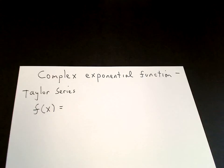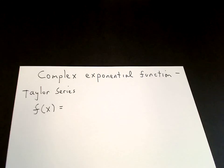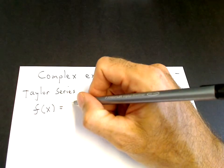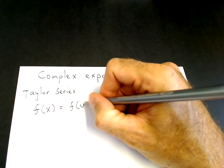The Taylor series for f of x is such that the function and all of its derivatives evaluated at x equals 0 on the left-hand side are equal to the power series and all of its derivatives evaluated at x equals 0.